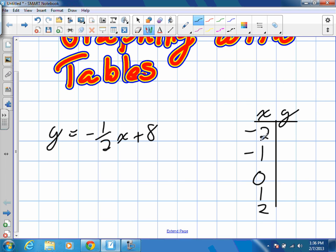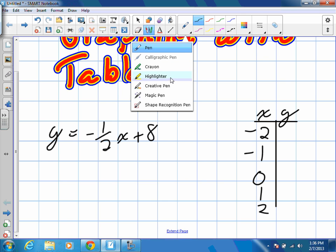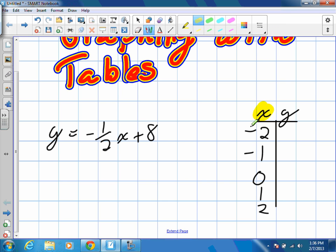We're going to choose just random numbers around our origin, around our x-intercept. These values, we're going to be replacing x in each of the equations with each of these values. So we're going to take negative 2 and plug it in for x in this equation. So y is equal to negative one half. We're going to replace x with the value of negative 2 and add 8. We're then going to solve for y, and that will be our y-coordinate, so it will give us one of our coordinates.